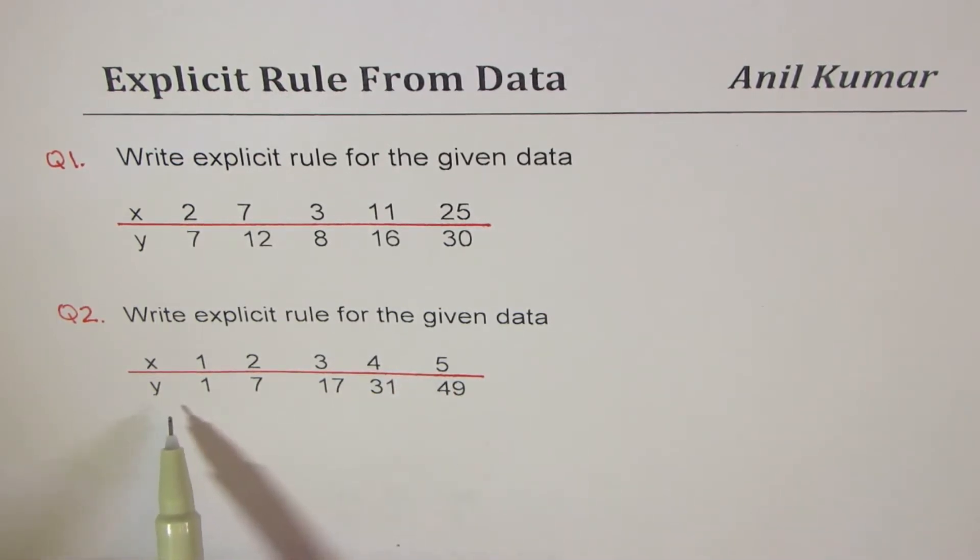Y values are 1, 7, 17, 31, 49. I'd like you to pause the video, answer the question, and then look into my suggestions.